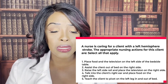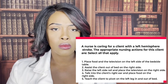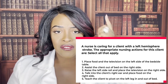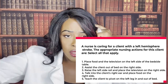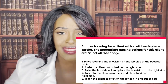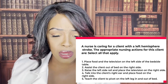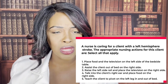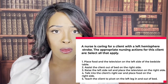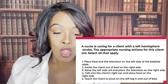Number two: to assist the client out of bed on the right side. False. Remember, if they had a left side stroke, the deficiency is on the right side — that's the weak side. So we're not going to get them out of bed on the weak side where they can fall. We're going to do it on the strong side, which is the left side.